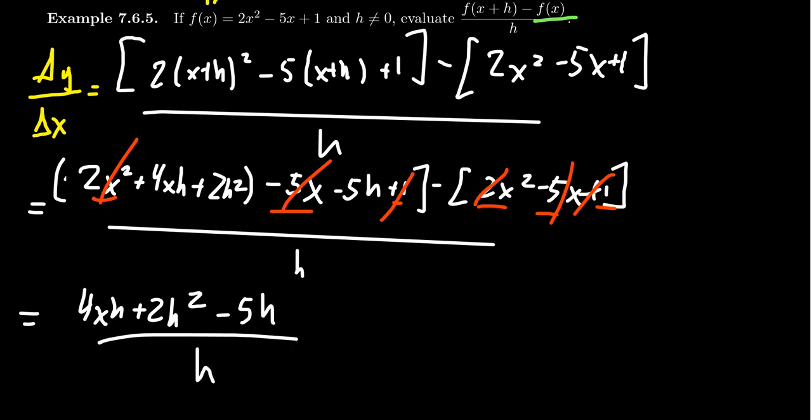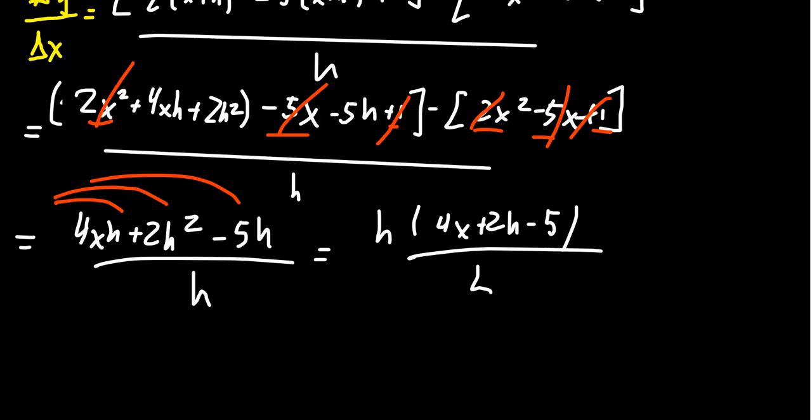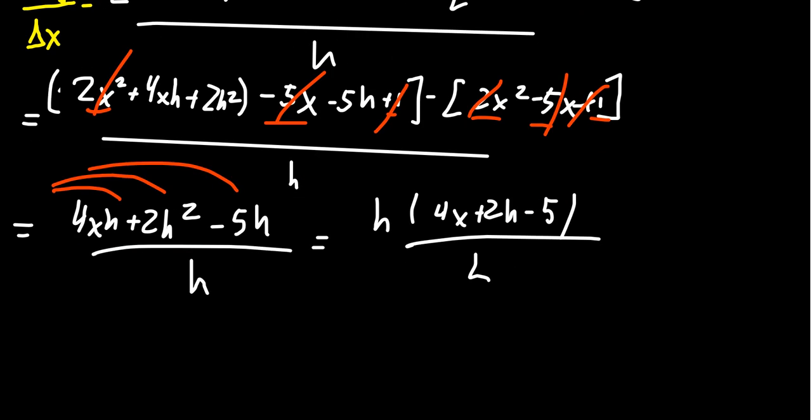Everyone in the numerator who did not cancel, who survived this battle, is now divisible by h. Factor out the common divisor of h. This then gives us h times 4x plus 2h minus 5 all over h. Now the h's cancel. And so in the end, we now see that the average rate of change, delta y over delta x, is equal to 4x plus 2h minus 5.